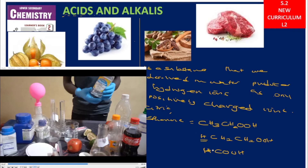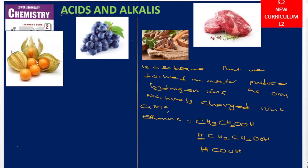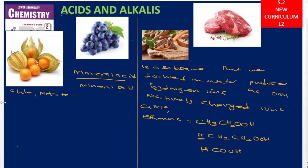After looking at organic acids, we also have what we call mineral acids. These mineral acids also start with the letter H when we write them. We are calling them mineral acids because we get them from mineral salts — the salts of chlorides, nitrates, carbonates, and sulfates.